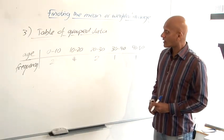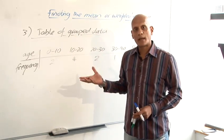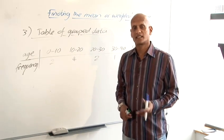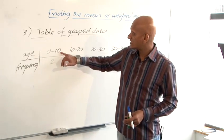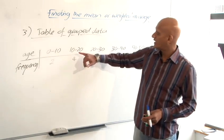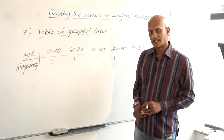So, our last case is a table of grouped data. And that would often happen because our data isn't discrete, it's continuous. And so here we've got an example, we've got age, 0 to 10, 2 people in that category, 10 to 20, 4 people in that category, and so on. And we want to find the mean of this data.